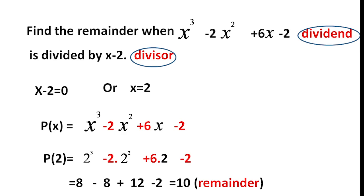10 is the remainder. If we were doing long division, we would get the same answer. So, without long division, we use the remainder theorem to find the remainder. We find the value of x from the divisor — it will be a linear polynomial — and substitute that value of x into the dividend P of x. That answer is the remainder.